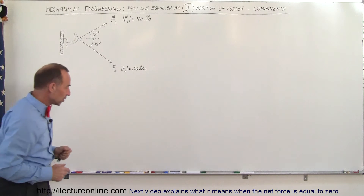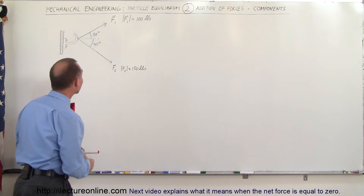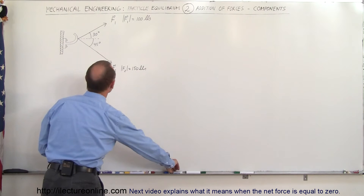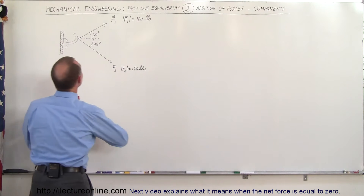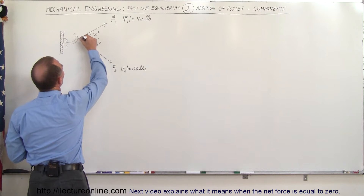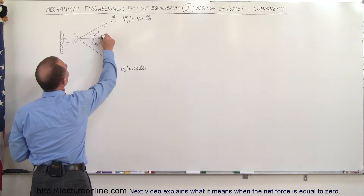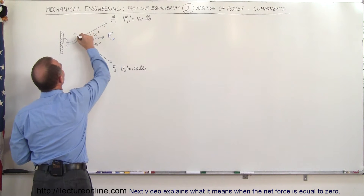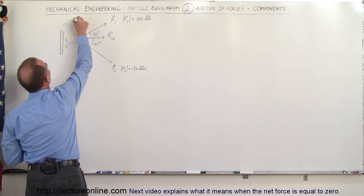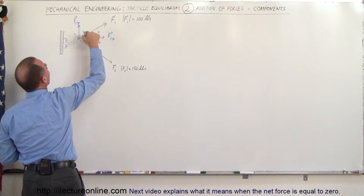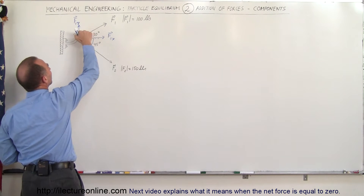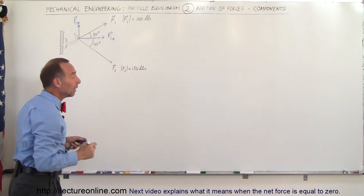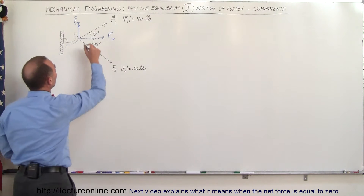Using a different color — blue — here would be the X and Y components of force 1. So that would be F1 in the X direction, and this here would be F1 in the Y direction. So these two components represent the single vector F1 right there, and we can do the same for the second force.